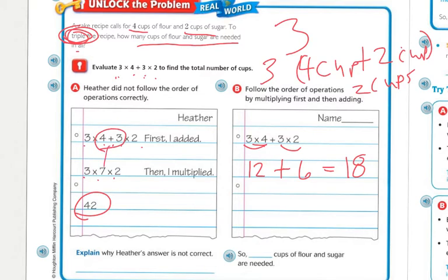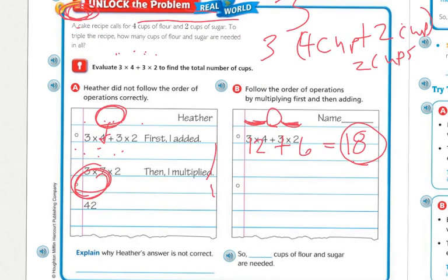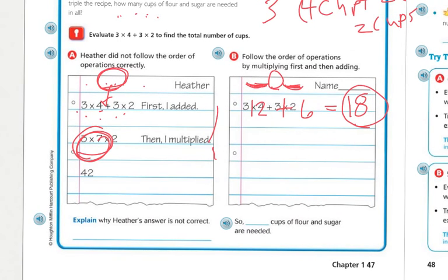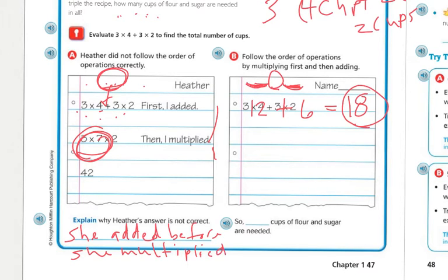Heather added four plus two first to get seven, then multiplied three times seven times two to get forty-two — a very different answer. We followed the order of operations by doing multiplication first, then addition. Heather's answer is not correct because she added before she multiplied, and the order of operations requires us to multiply first. So eighteen cups of flour and sugar are needed.